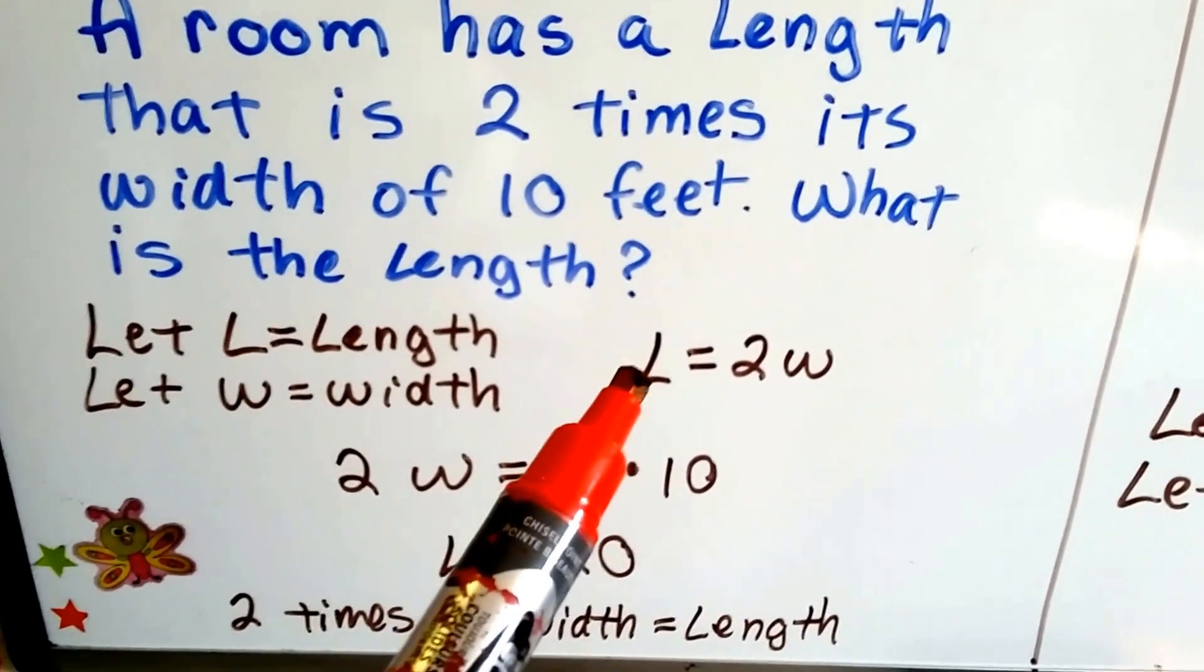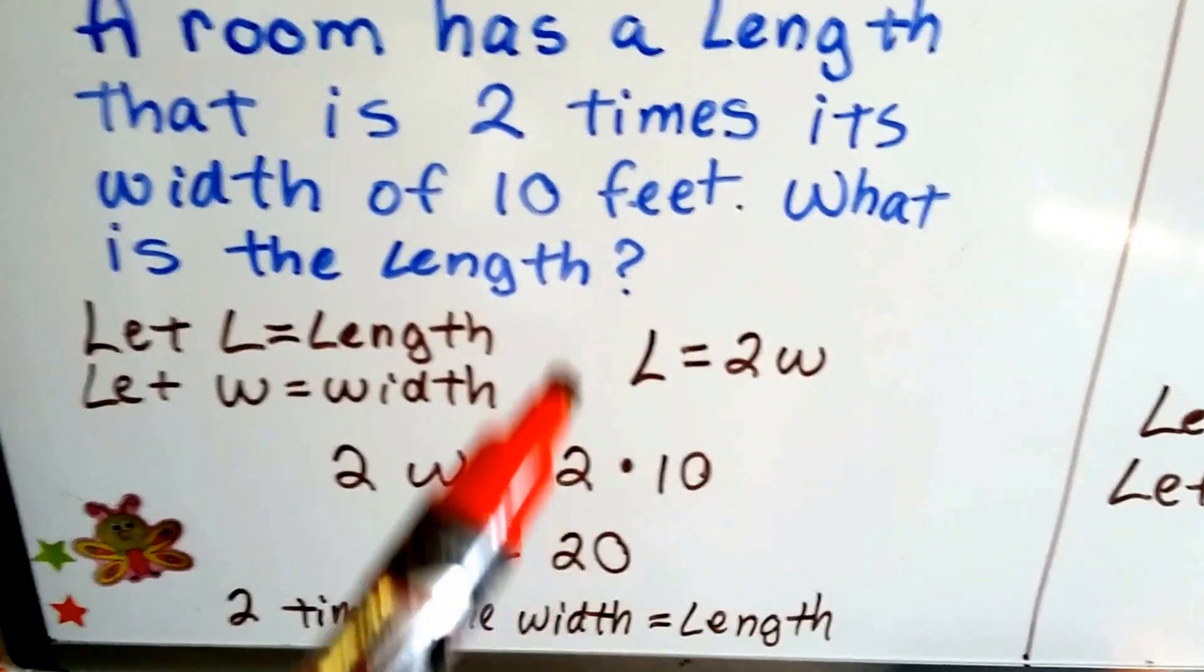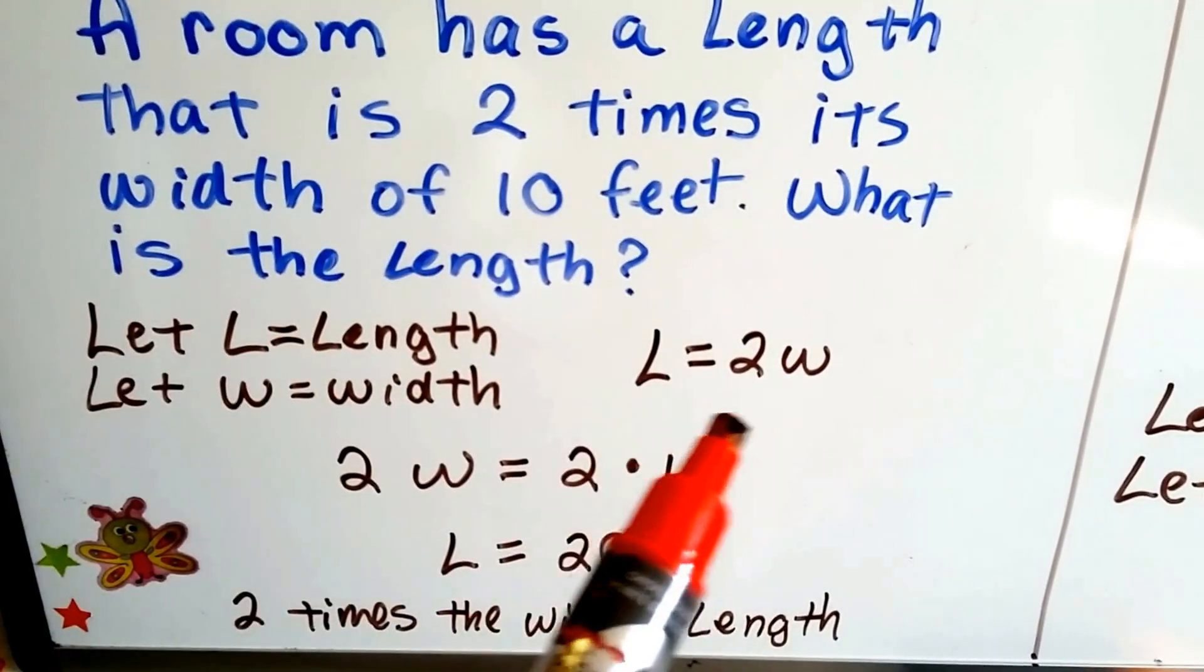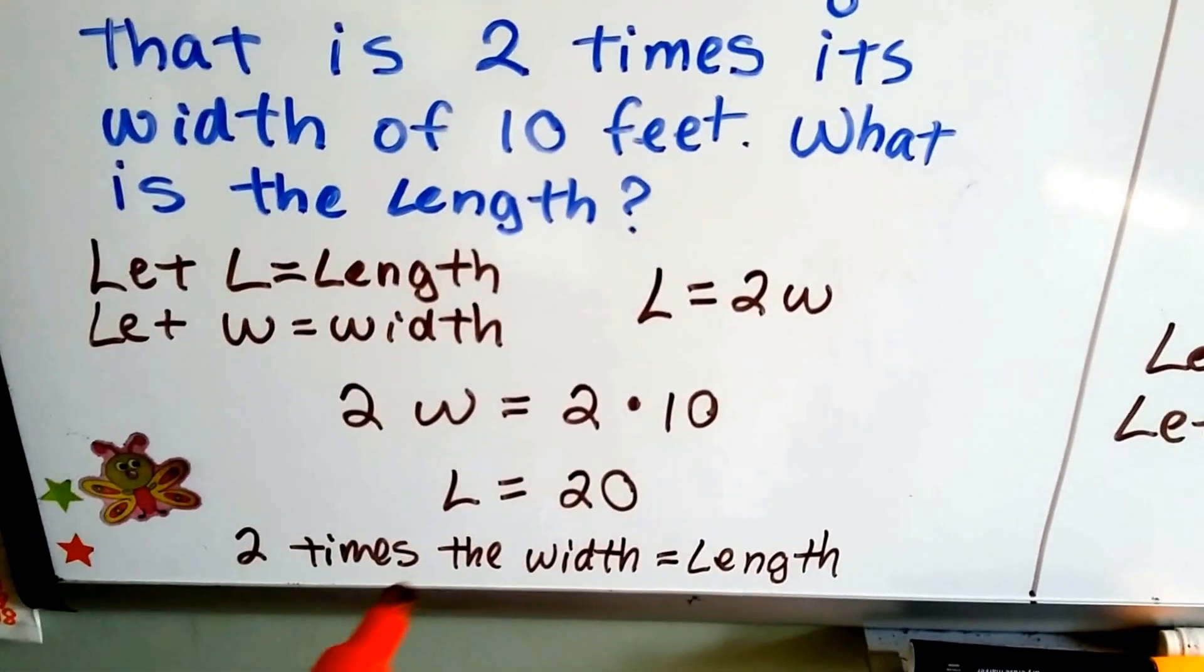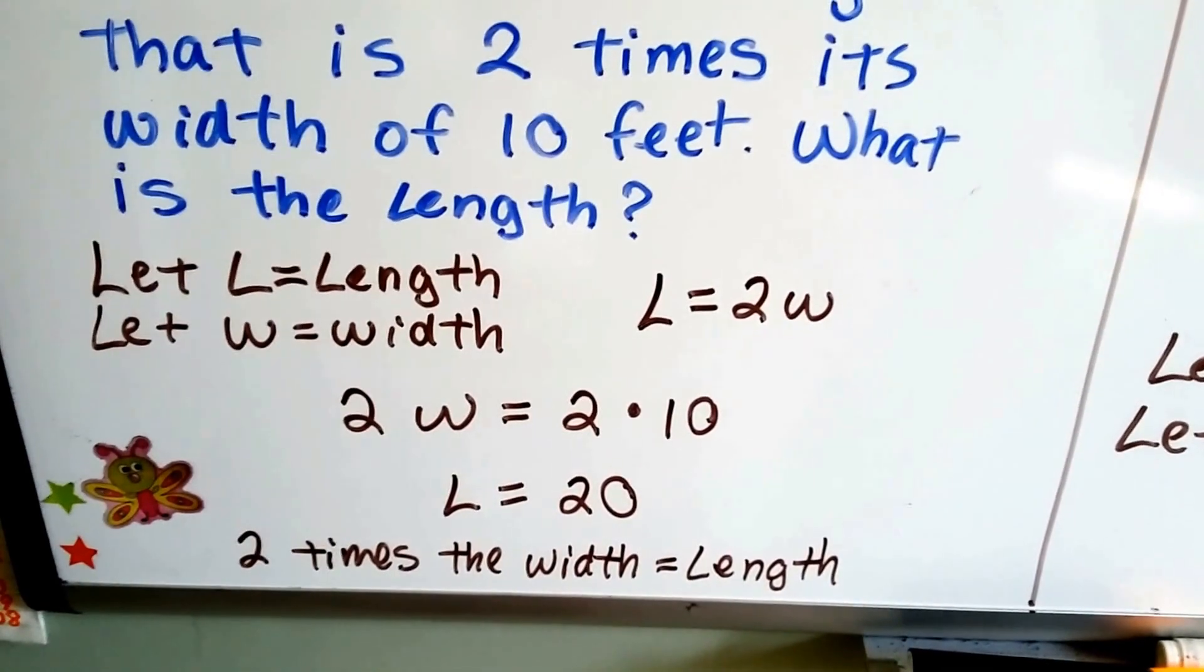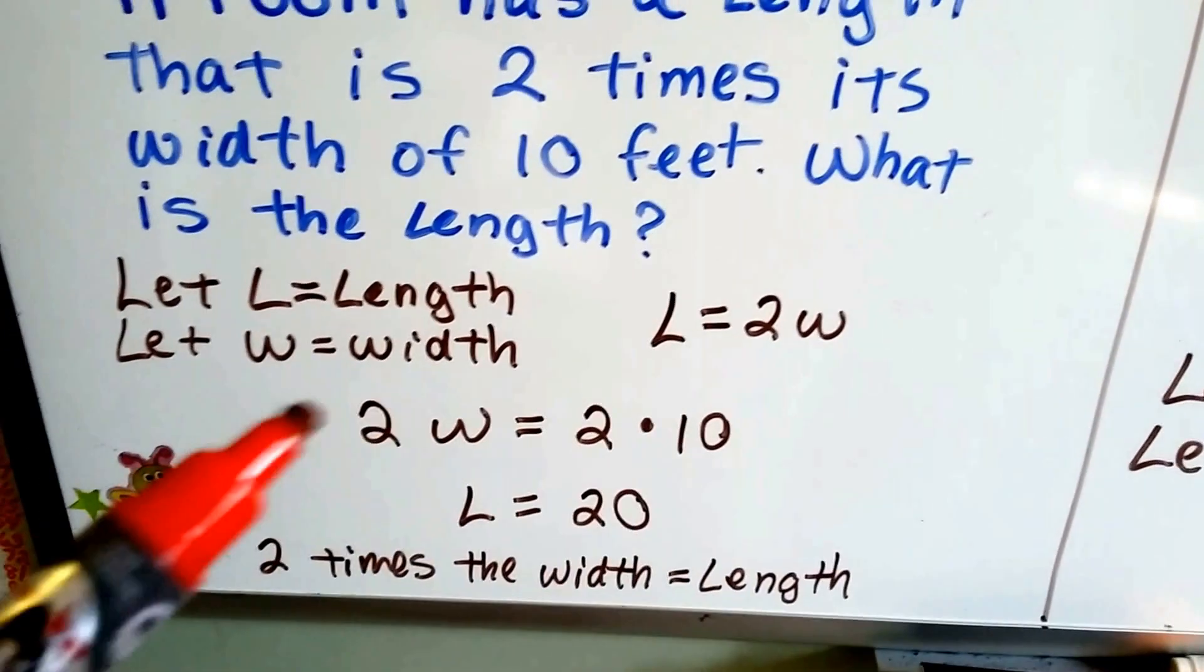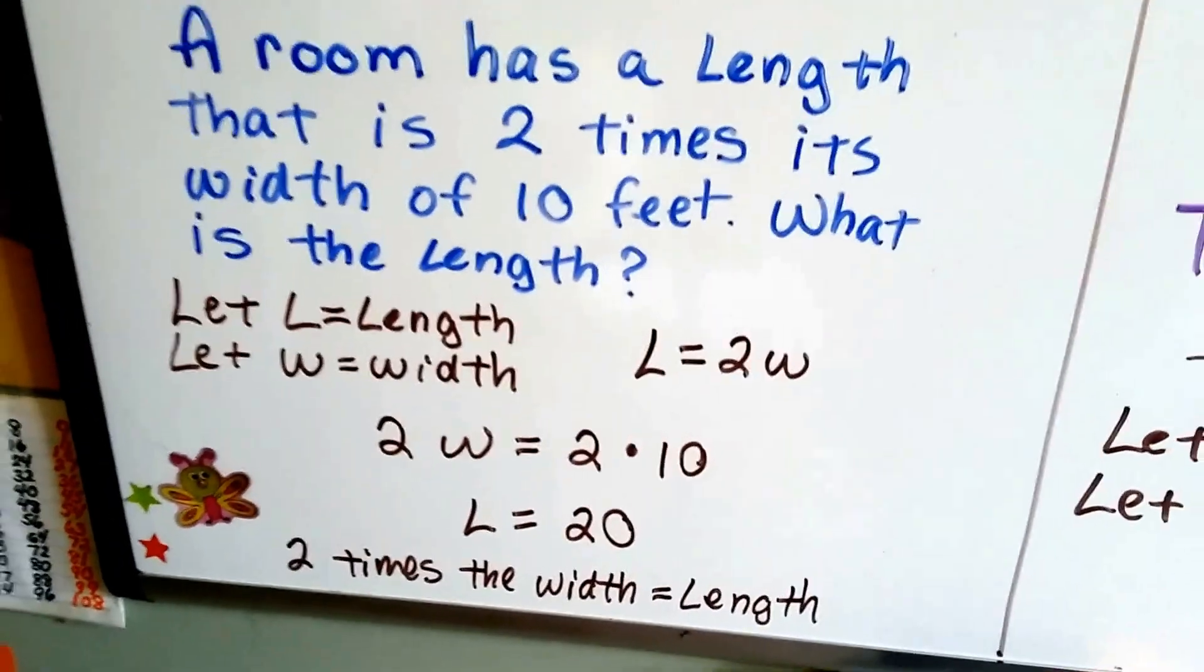So our equation ends up becoming L equals 2W. We just plug in the 10 for the W and we get the length is equal to 2 times 10. It's 2 times the width is what the length is. By using the L and W, it helped us keep track of what we were doing.